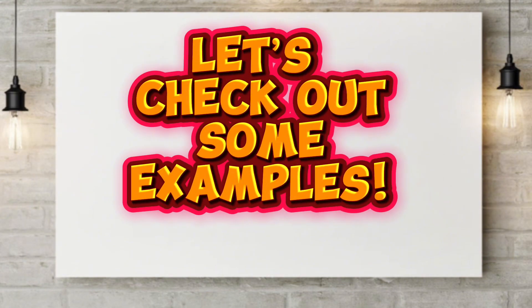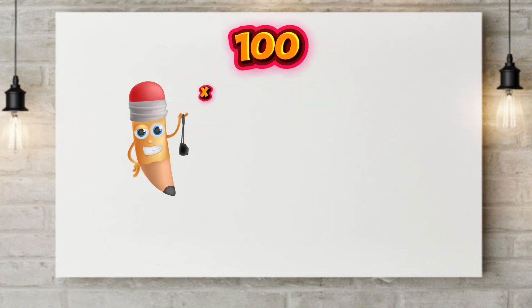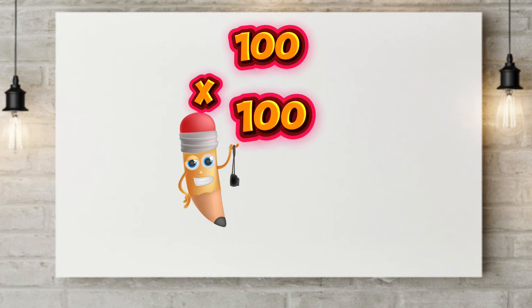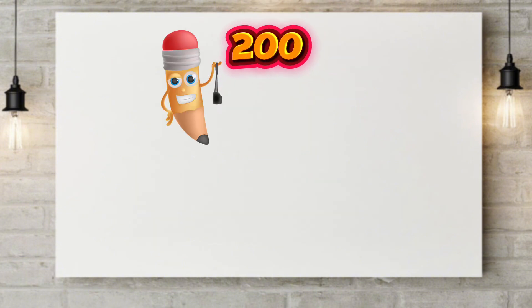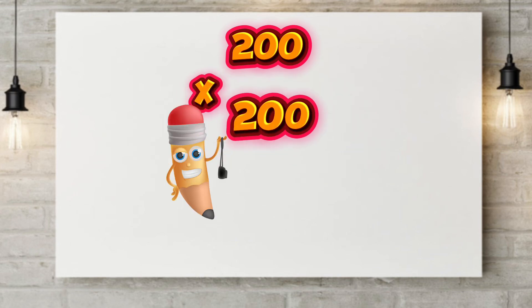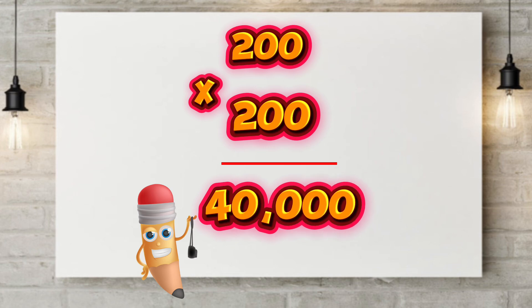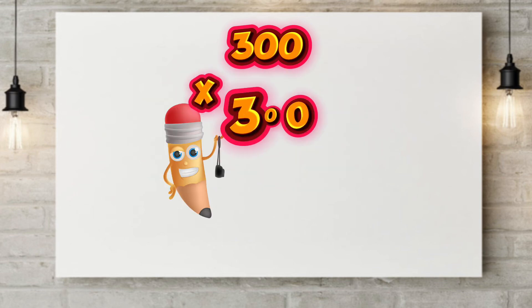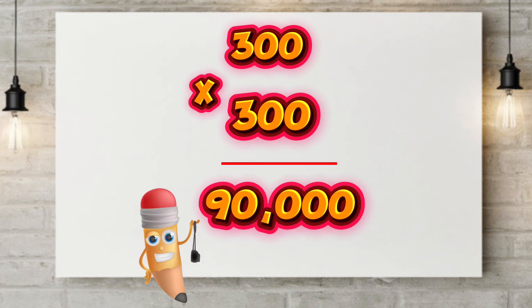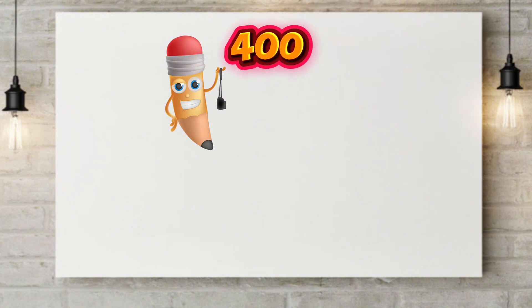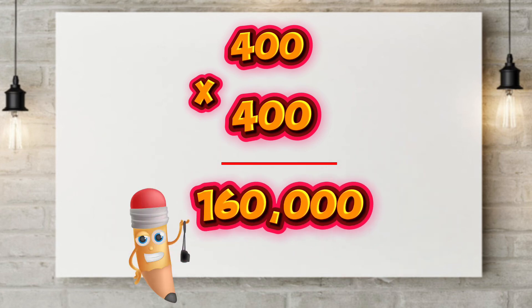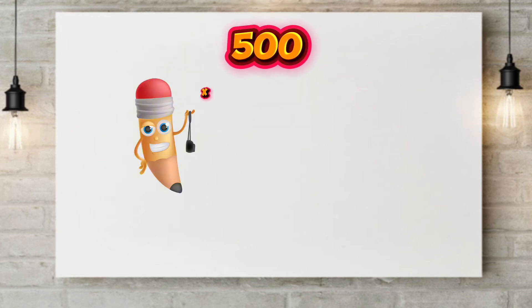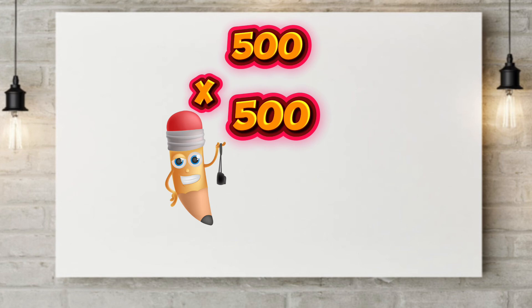Let's check out some examples. 100 multiplied by 100 is equals to 10,000. 200 multiplied by 200 is equals to 40,000. 300 multiplied by 300 is equals to 90,000. 400 multiplied by 400 is equals to 160,000. 500 multiplied by 500 is equals to 250,000.